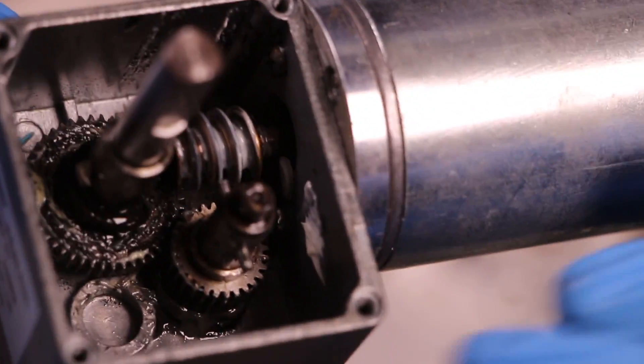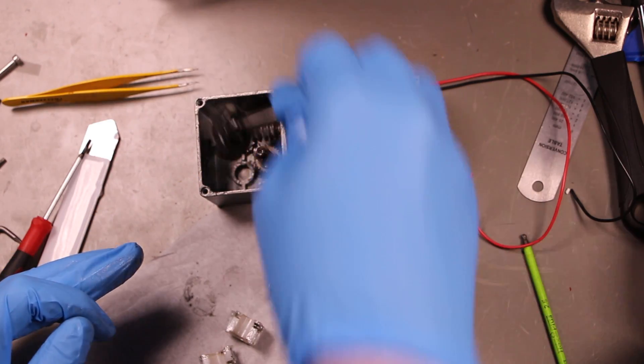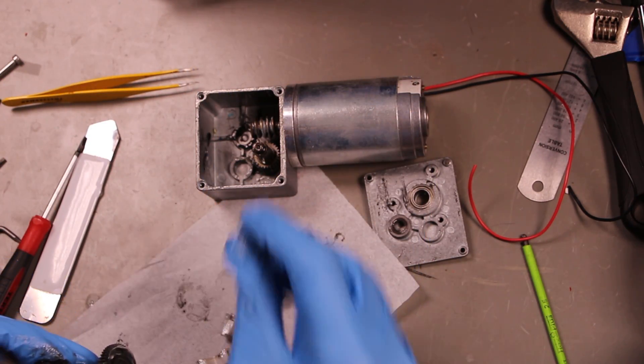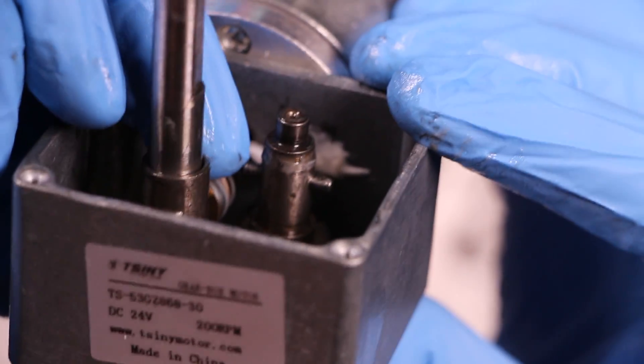So here with the gearbox open, you can see it's got one output shaft, which has a bearing at one side and a bushing at the other side, and a single metal spur gear. Then there's an intermediate shaft with a metal spur gear, like the other attached using a metal key.